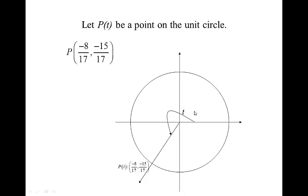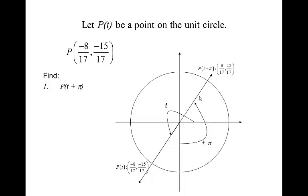Now, let P of T be a point on the unit circle — some angle T that intersects at negative eight-seventeenths, negative fifteen-seventeenths. Find the point if we add pi onto it. If we add pi onto this angle, it's going to bring us all the way to the opposite side, taking us over to quadrant one. You'll notice that we'll have the same coordinates — eight-seventeenths, fifteen-seventeenths — as we had before. The only difference is they're both positive because we're in quadrant one.